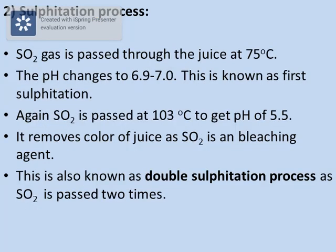After clarification, the sulfitation process is done on cane juice. Here, SO₂ gas is passed through the juice at 75 degrees Celsius. Because of this, the pH changes to 6.9 to 7.0. This is known as the first sulfitation. Again, SO₂ is passed but at a higher temperature of around 103 degrees Celsius, and here the pH changes to 5.5.